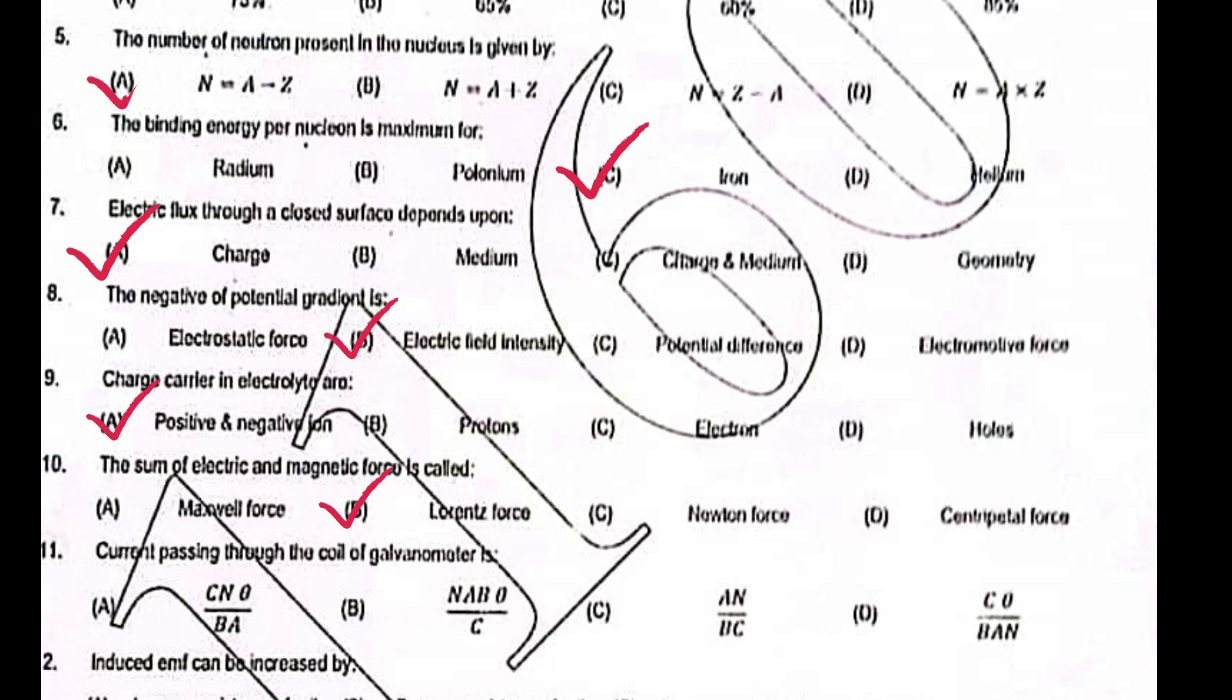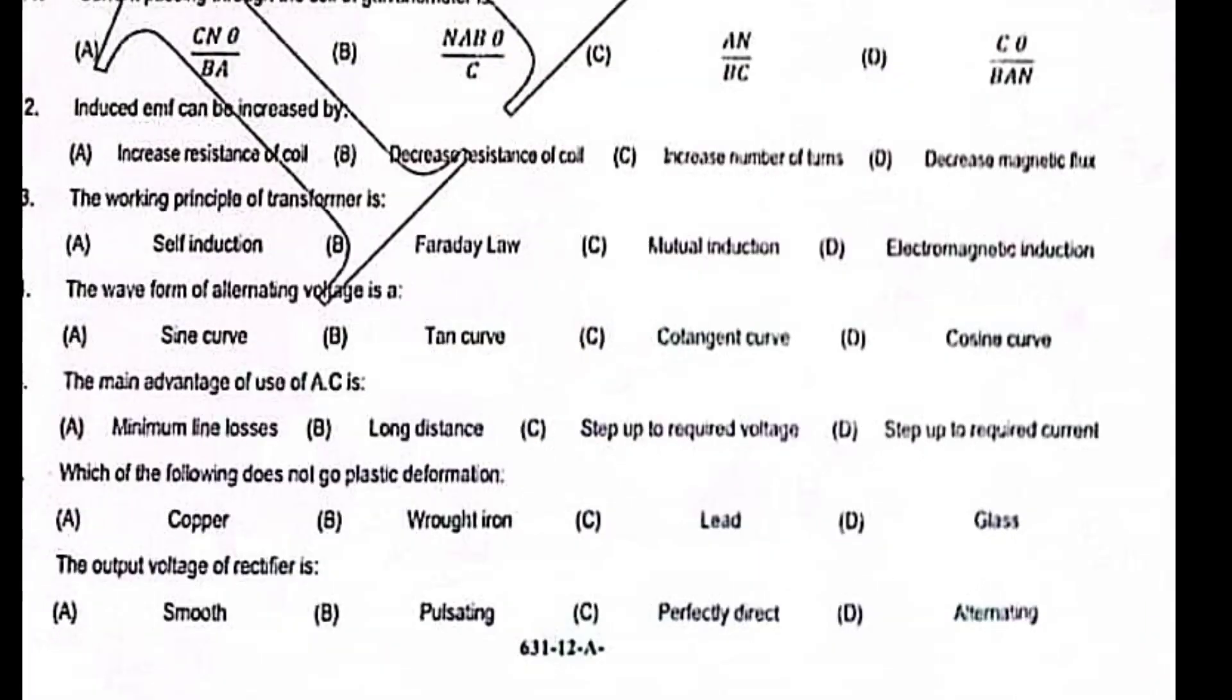passing through the coil of galvanometer is C into theta divided by BAN. Induced EMF can be increased by increased number of turns. The working principle of transformer is electromagnetic induction.